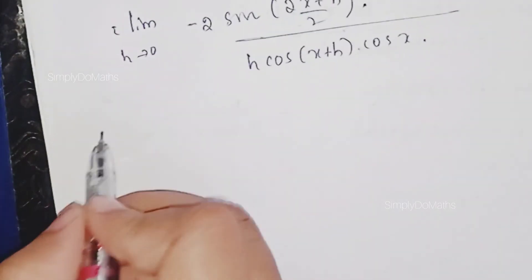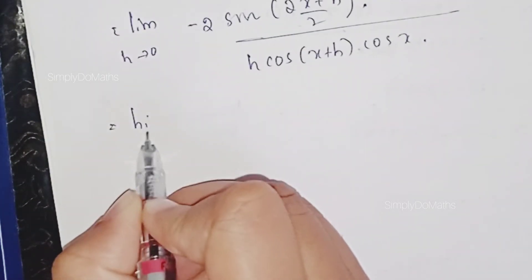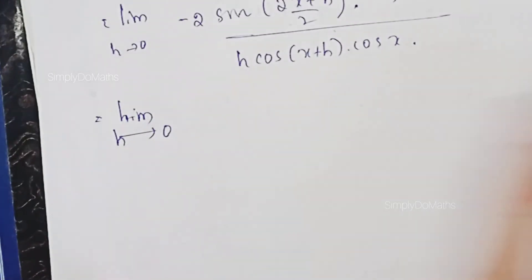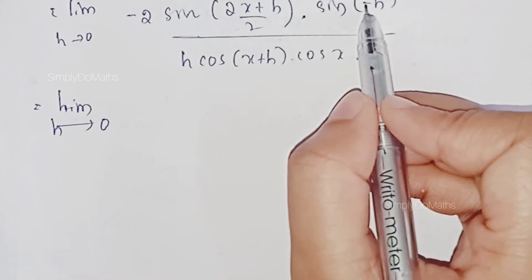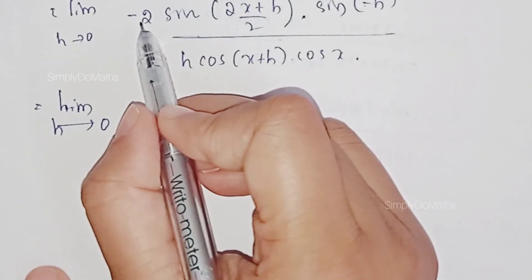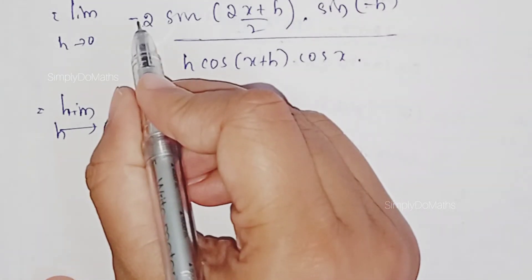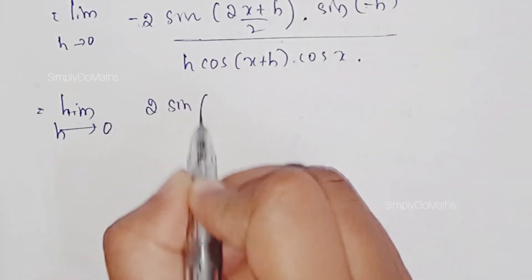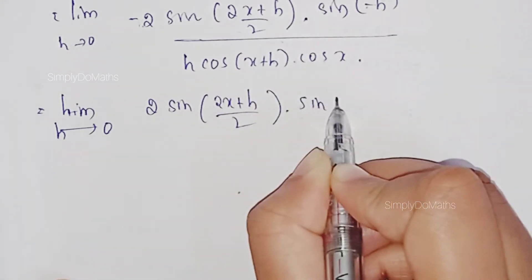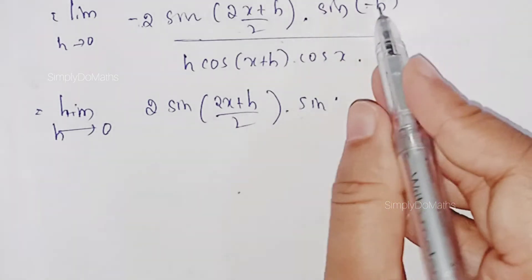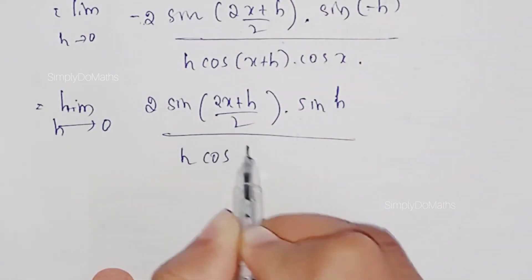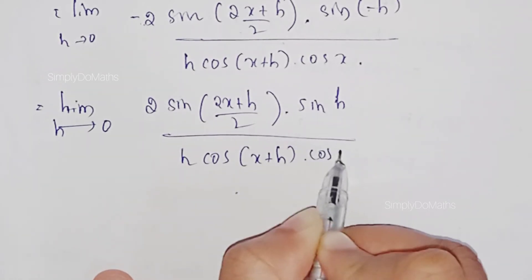Since sin of minus h equals minus sin h, the two negatives give a positive, so this becomes plus 2 sin of 2x plus h divided by 2, into sin of h divided by 2, all divided by h into cos of x plus h into cos x.